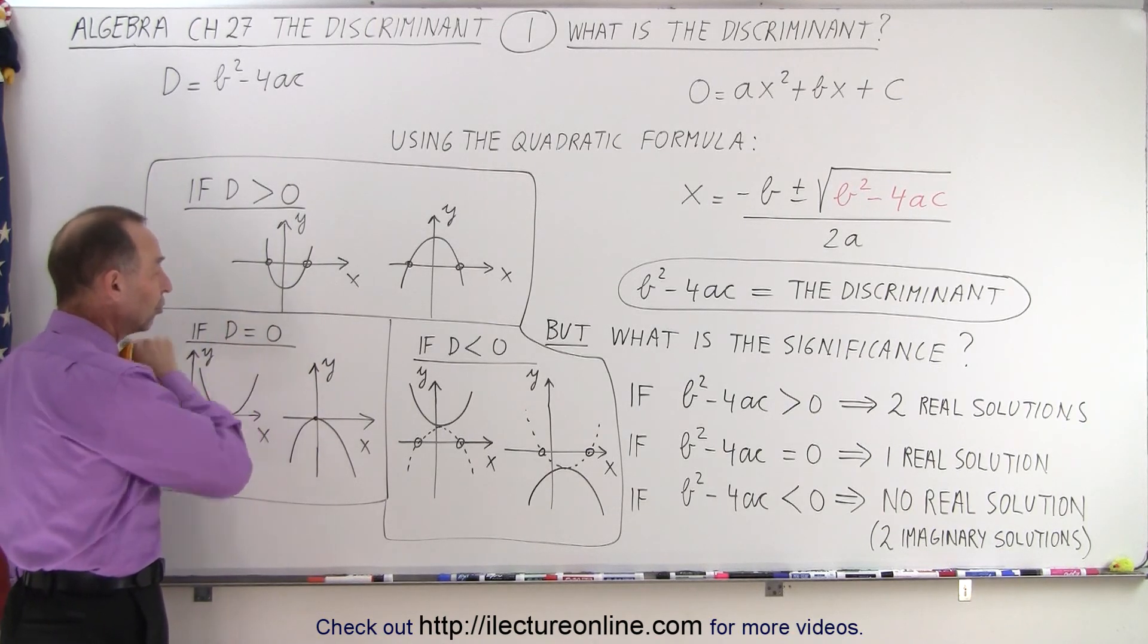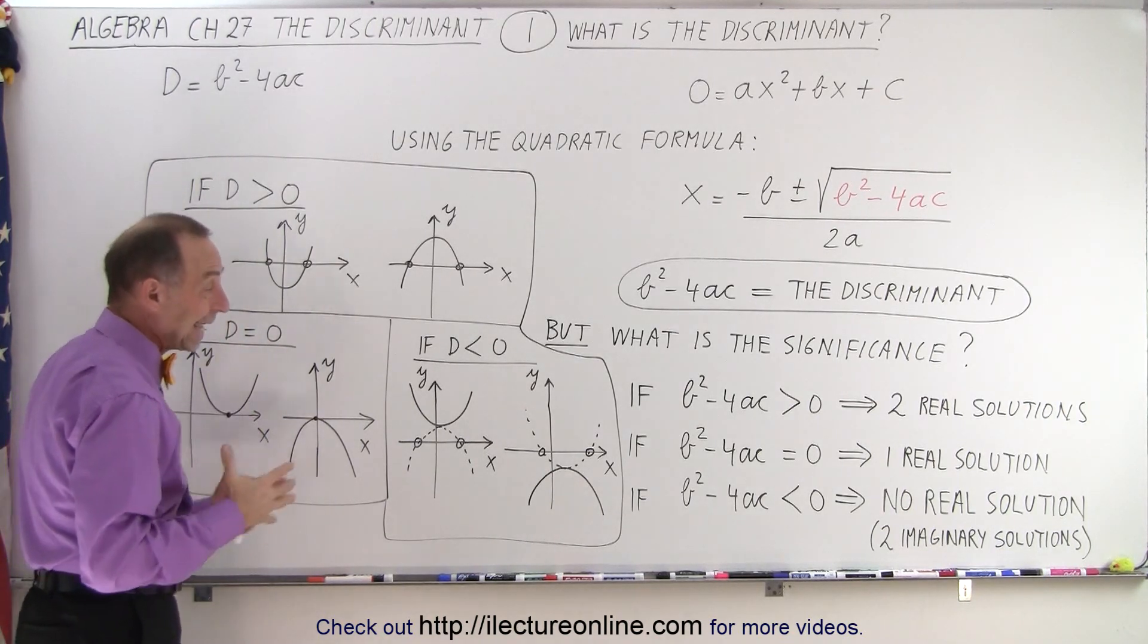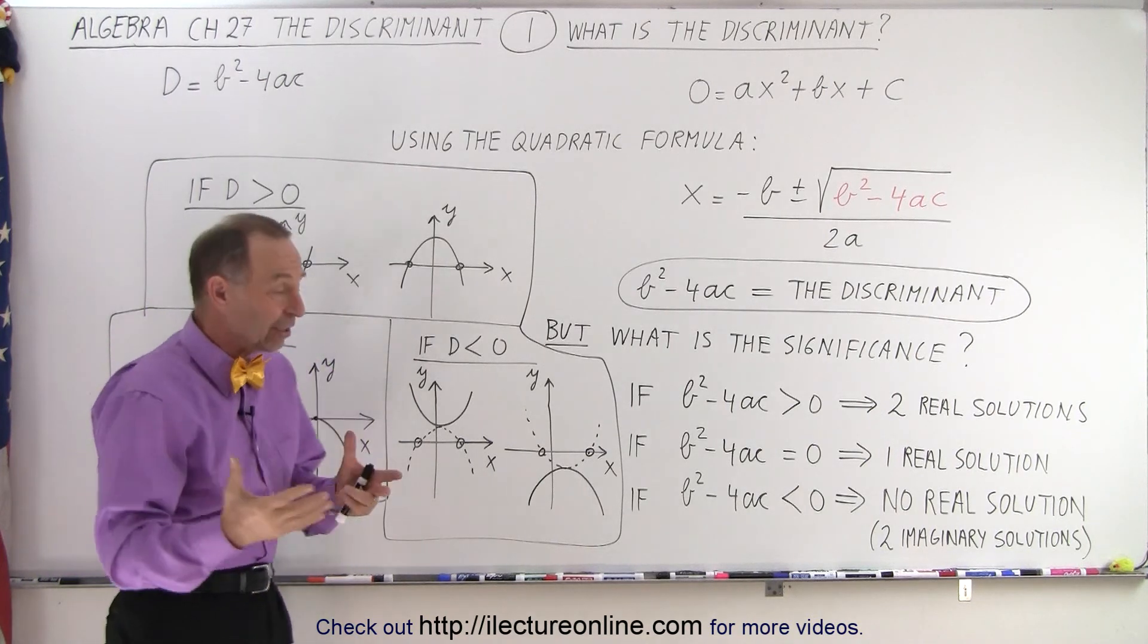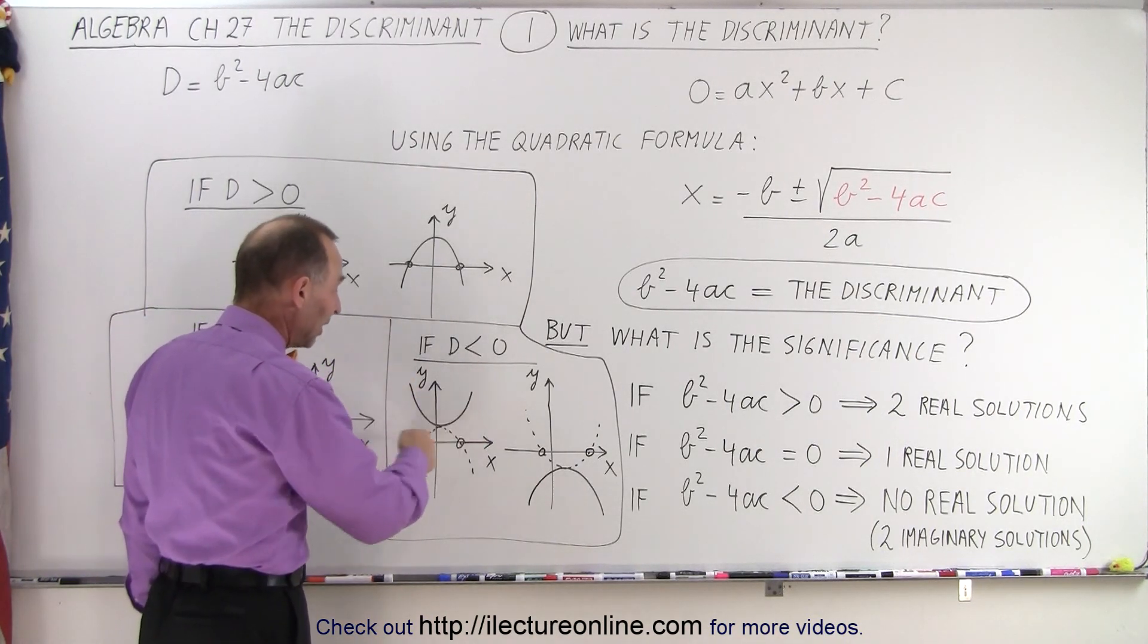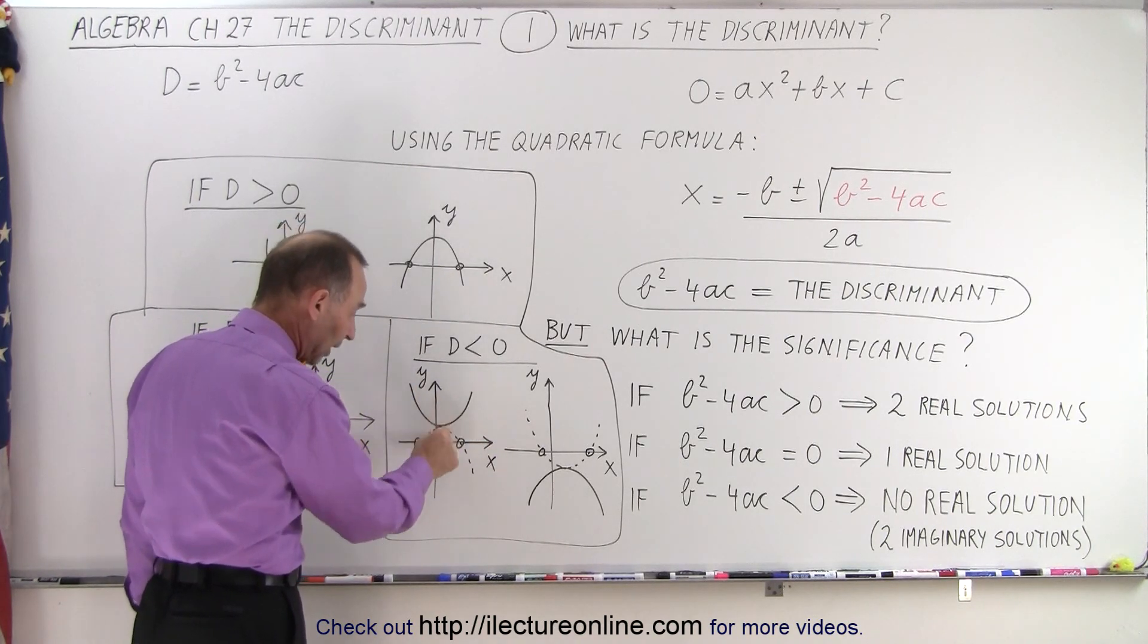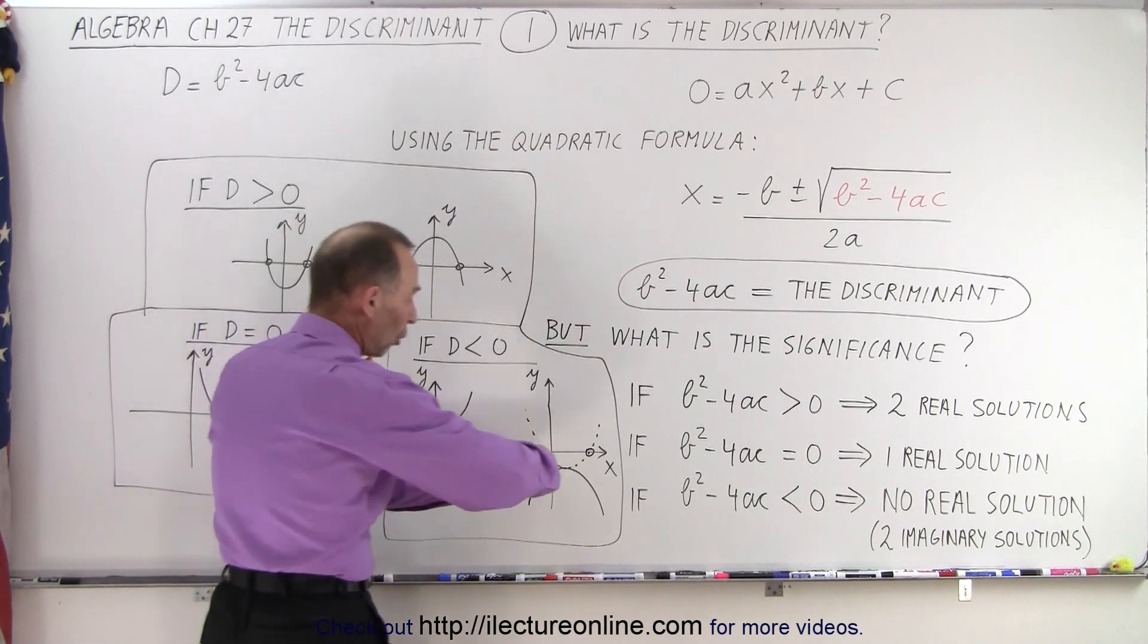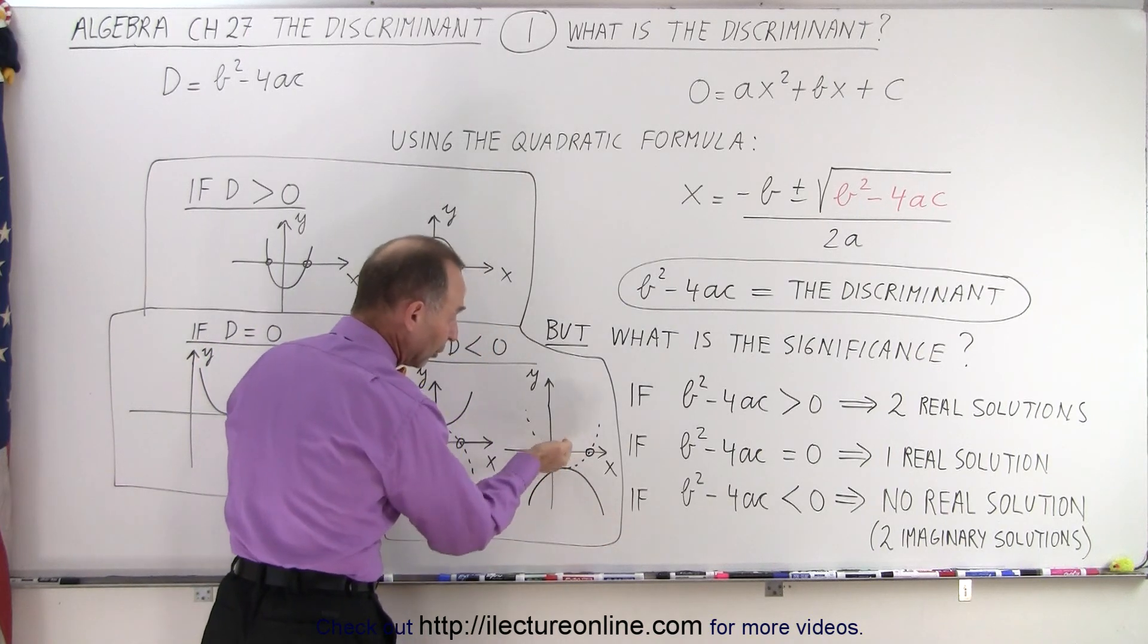And when the discriminant is a negative number, so there's no real solutions, that means the parabola will never cross the x-axis. So open upward like this but not get all the way down to the x-axis, or it will open downward and not get all the way to the x-axis.